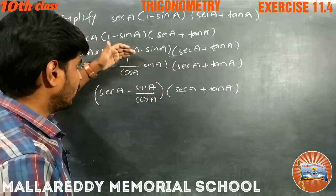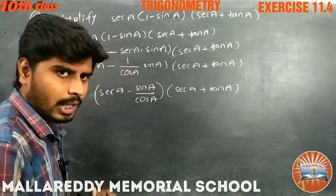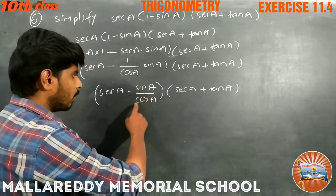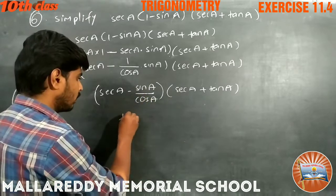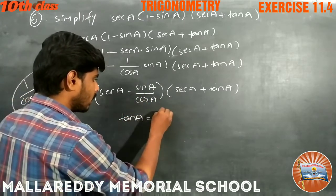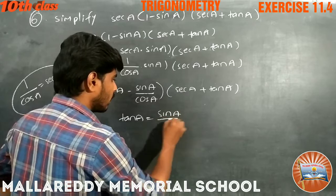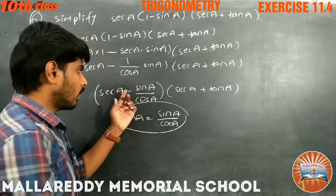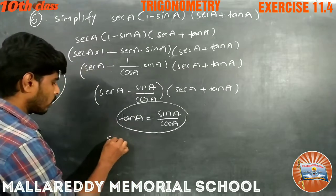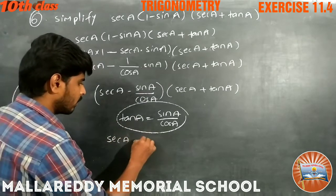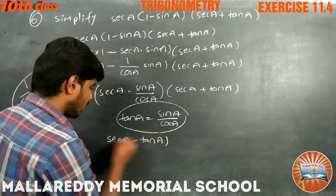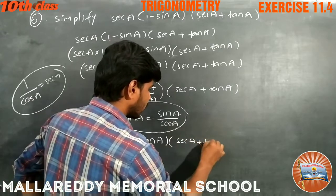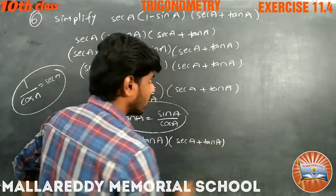This sin a into 1 by cos a is sin a by cos a. We can write sin a by cos a as tan a, since tan a equals sin a by cos a. So it becomes secant a minus tan a into secant a plus tan a.